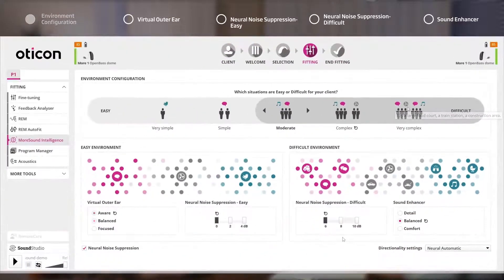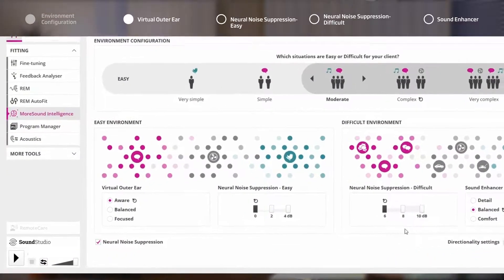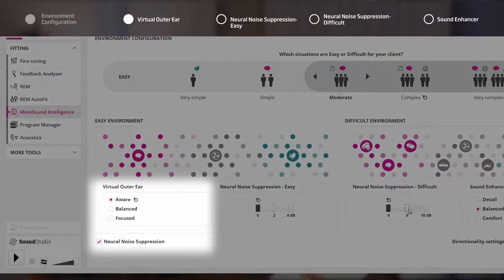As Rachel is not experiencing much difficulty in simple situations, Virtual Outer Ear will be left as Aware. If Rachel was struggling to hear even in easy listening environments, Focus setting could be considered which would allow more focus on speech from the front while keeping access to all surrounding sound scene.